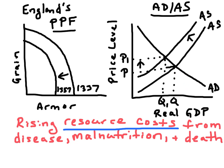While that's a significant impact on real GDP — lowering it and leading to rising unemployment — we also saw an increase in resource costs because there was less of a supply of labor, resulting from the disease, malnutrition, and death. So the aggregate supply curve most likely also shifted to the left. In England, there were higher prices, less output, and some increased unemployment in the short term.